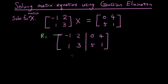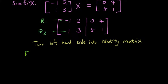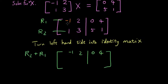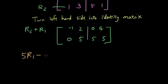So let's try to see if we can do that. I've written it out — turn the left-hand side into identity matrix. This is row one, this is row two. As you know, the identity matrix has a zero on the bottom left, so the first thing I'm going to do is row two plus row one. Row one stays the same. Row two plus row one: one plus negative one is zero, three plus two is five, five plus zero is five, one plus four is five. The next thing I'm going to do is change the number two into a zero — I want to get all the zeros sorted first — so I'm going to do row one times five minus row two times two.